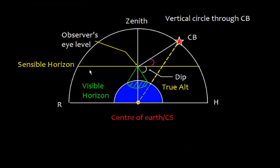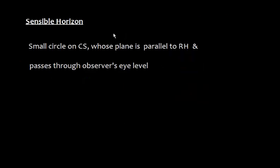Now let me define sensible horizon again. Looking at this yellow line, this is the sensible horizon. It is parallel to the rational horizon, and the rational horizon is a great circle because it passes through the center of the Earth. The sensible horizon does not pass through the center of the Earth, so it is a small circle. The sensible horizon is a small circle on the celestial sphere whose plane is parallel to the rational horizon and passes through the observer's eye level.